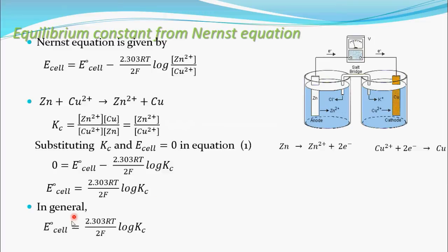In general E°_cell equal to 2.303 RT/NF log K_c. Not 2F, it should be NF. Because in Daniel cell there will be 2 electrons transferring. In general N electrons. So in general, this relation between Nernst equation and equilibrium constant is this one.